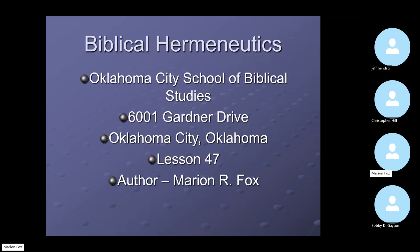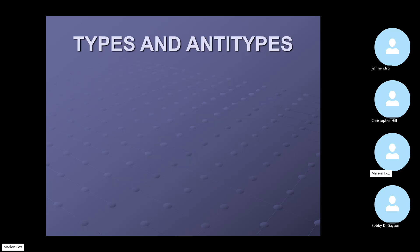I'm assuming you can see the screen, and if you can't let me know. It's lesson 47 on biblical hermeneutics, and we'll continue until we finish the material. We're going to look at types and antitypes. These are very important. I believe a type and an antitype arrangement is a kind of prophecy.